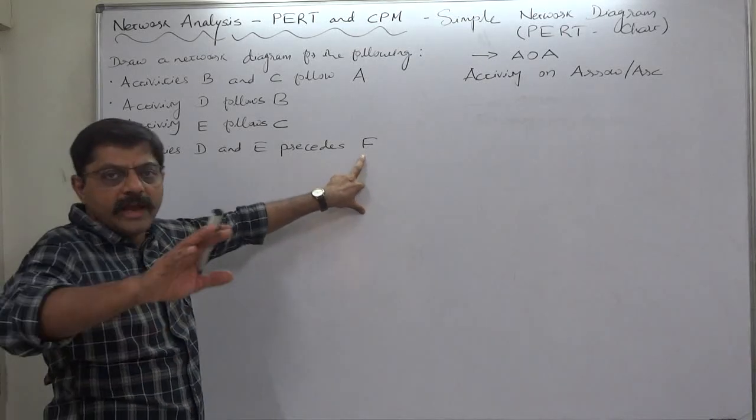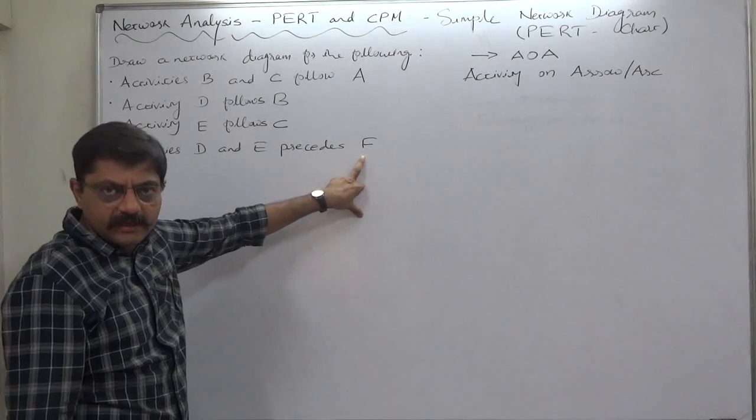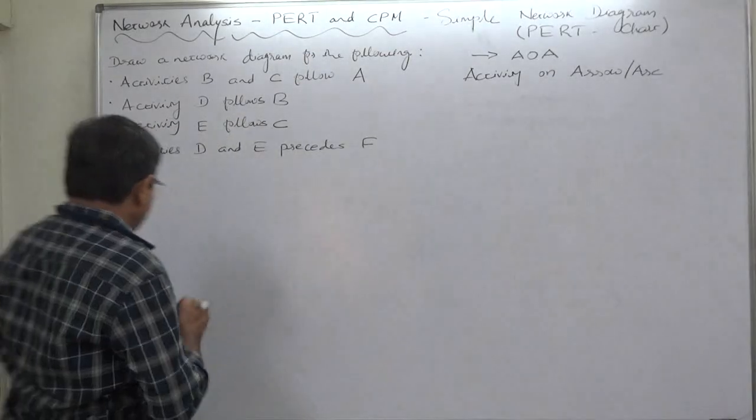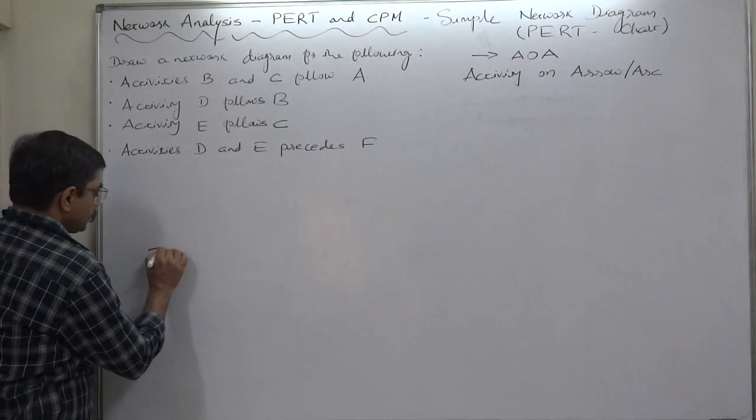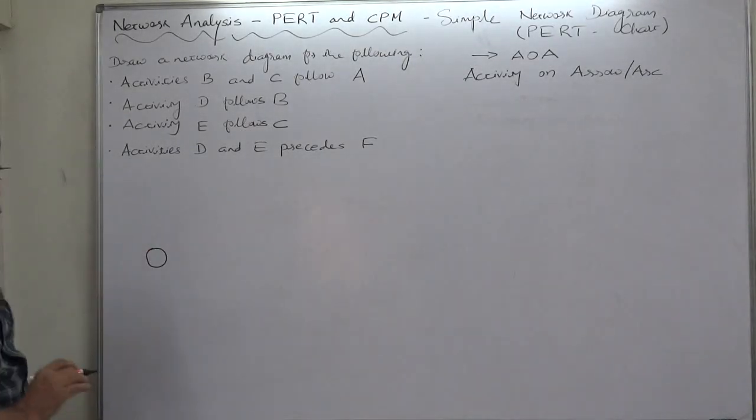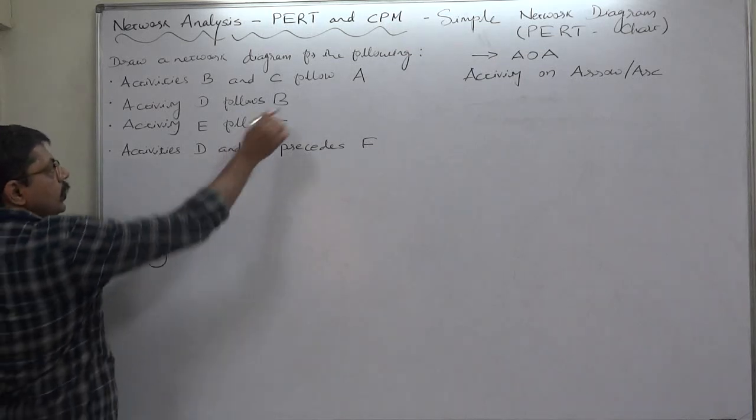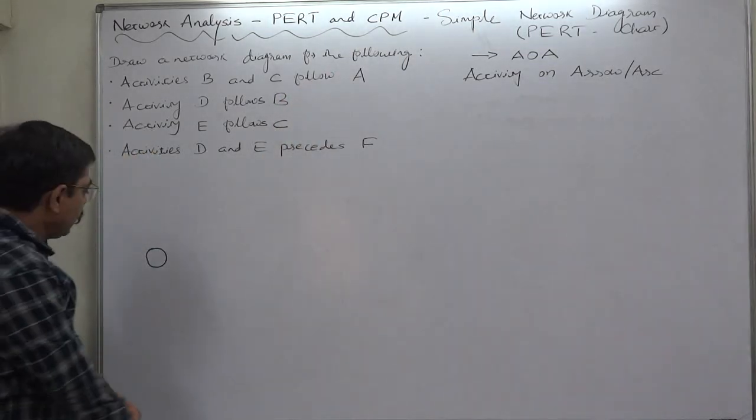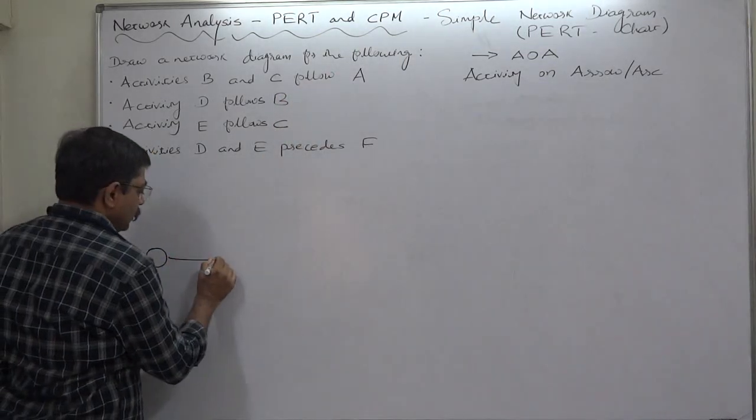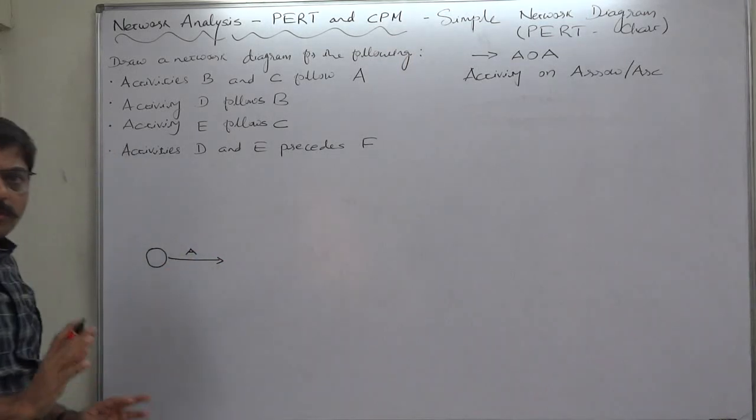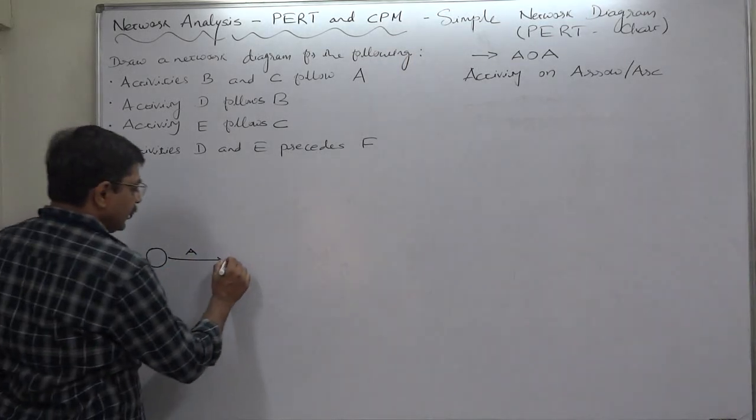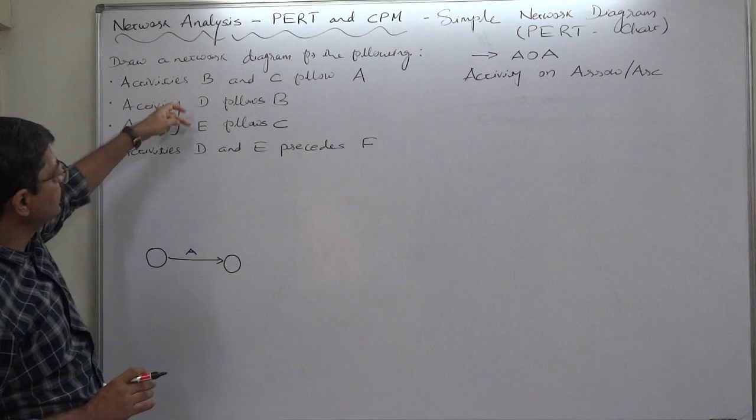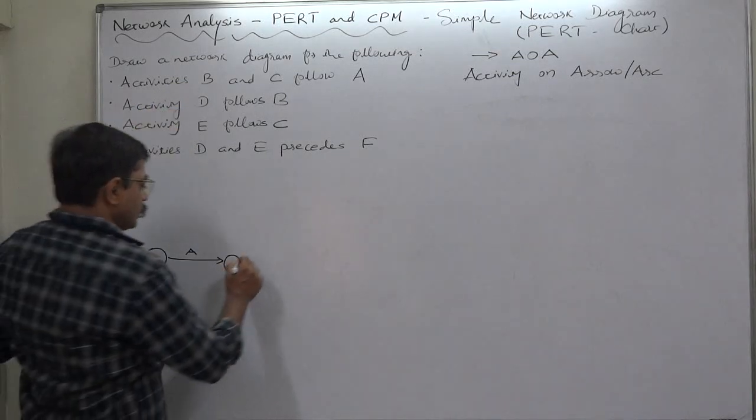Yes, as I said earlier the network diagram is going to start with only one activity, initial activity A, and it is also going to end with only one activity. So we shall keep in our mind this thing. Let's start. First of all starting. Now this is start of the network, only A.